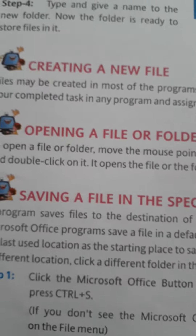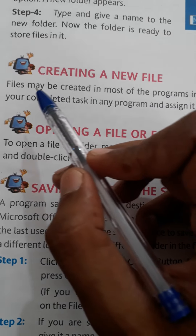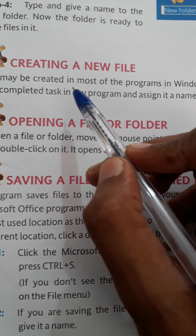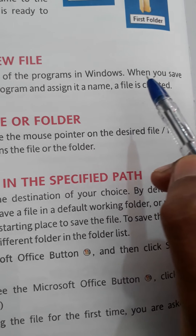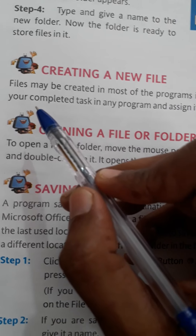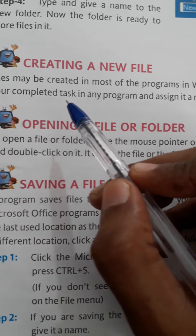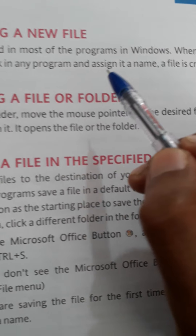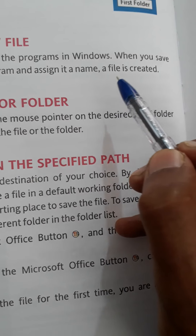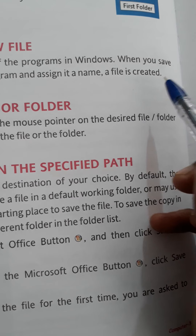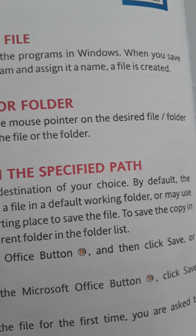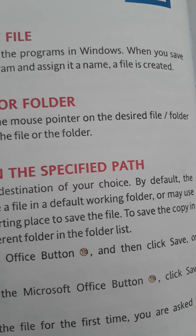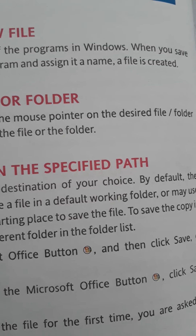Creating a new file. Files may be created in most programs in Windows. When you save your completed task in any program and assign it a name, a file is created. For example, when we make a drawing in the Paint program and save it, it's called a file of the Paint program.